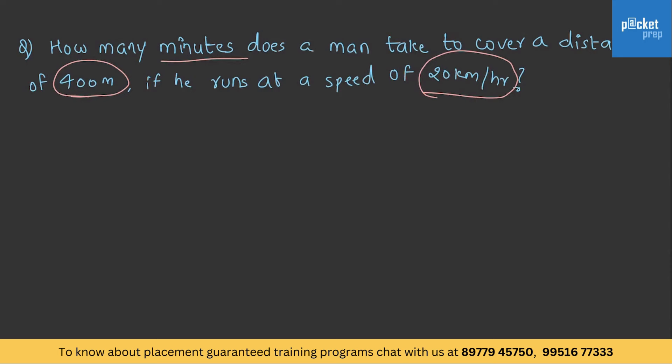That is, a man is running at 20 kilometers per hour and he covered 400 meters of distance. In how much time? So, let's solve this.